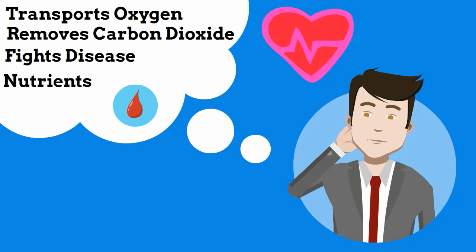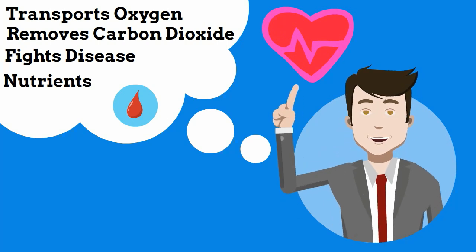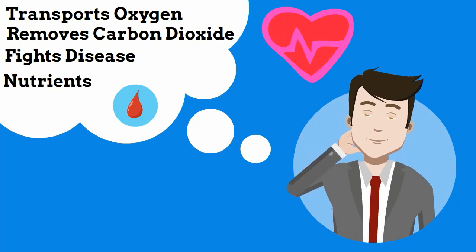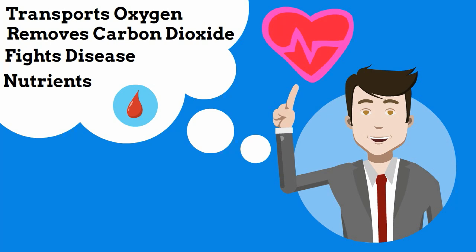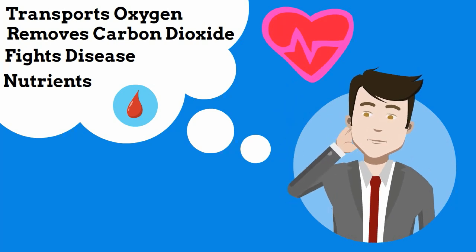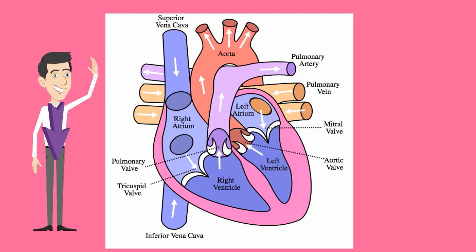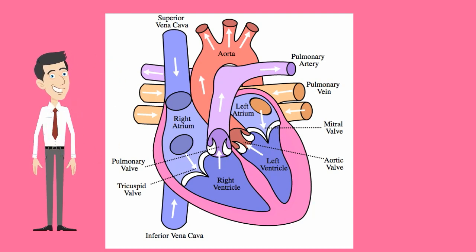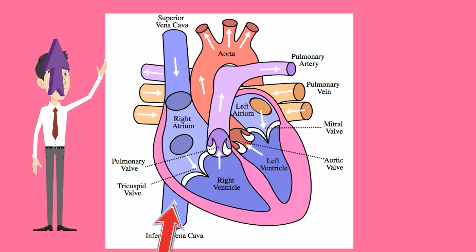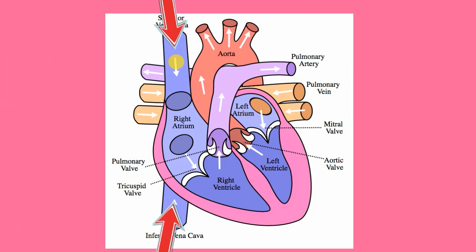The heart pumps the blood through the body with the help of veins and arteries. Blood from the lower parts of the body enters the heart through the inferior vena cava, and from the head and upper parts of the body through the superior vena cava. These two large veins empty into the right atrium.